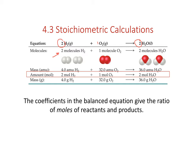Oxygen is 32 AMU and water is 18 AMU. With two waters, that's 36 AMU of water produced—conservation of mass holds: 32 plus 4 is 36. Those coefficients not only represent two molecules; I can also interpret them to mean two moles of hydrogen react with one mole of oxygen to produce two moles of water.